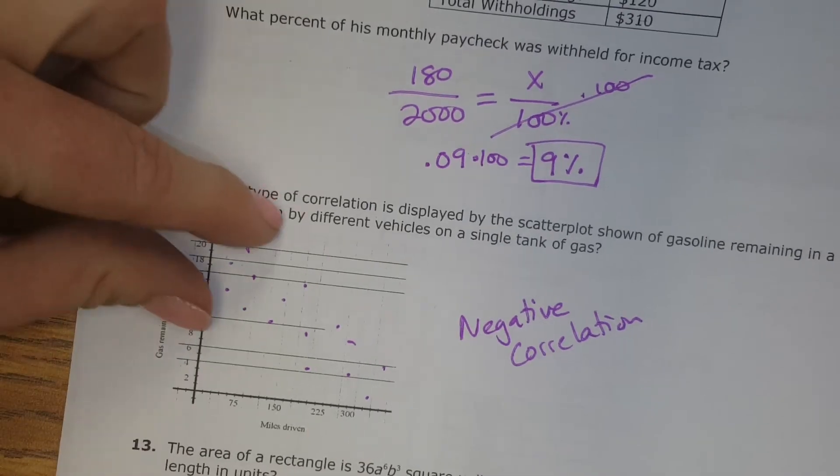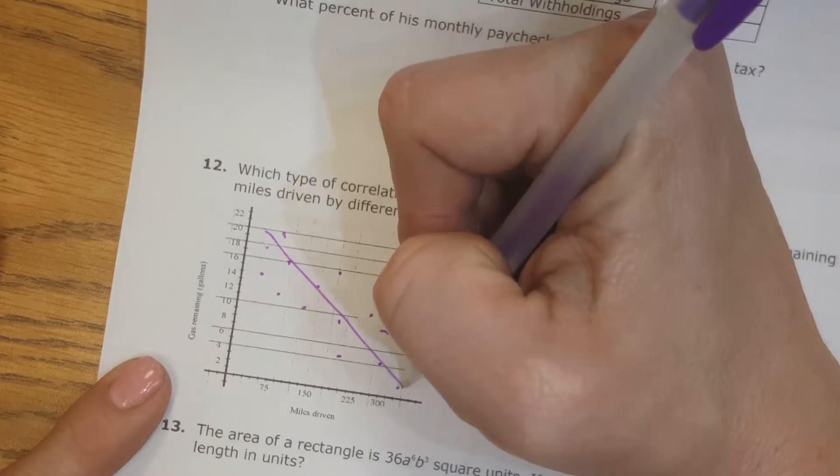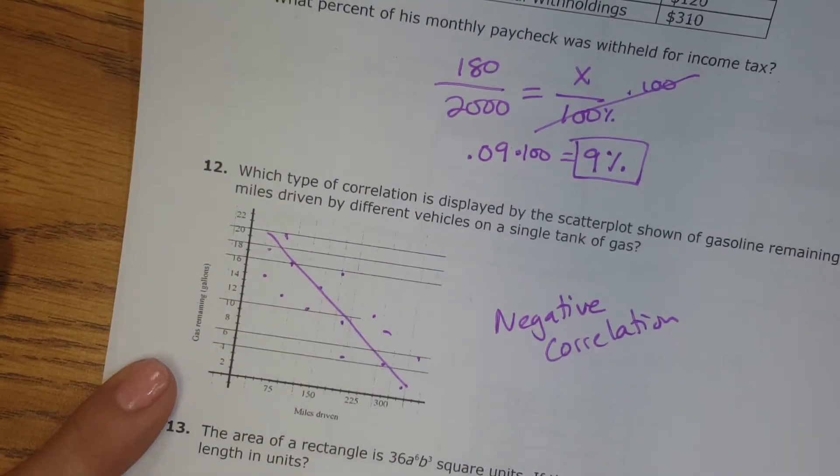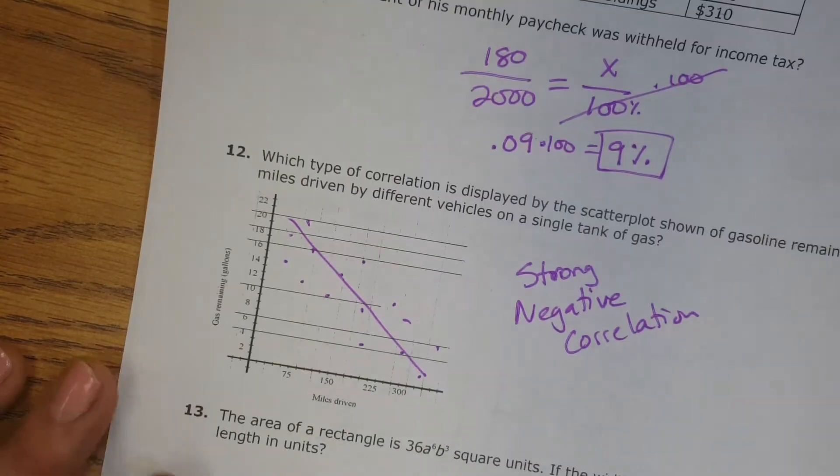And the points are pretty close together. They follow the same general trend. They're not super spread out. You could draw a line, and most of those points would fall really close to that line. So I would say this is a strong negative correlation.